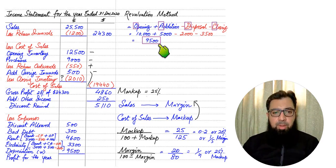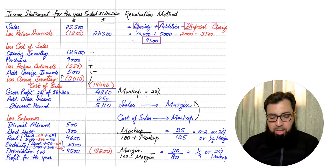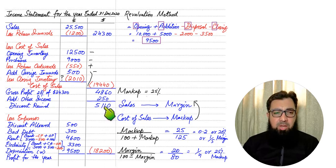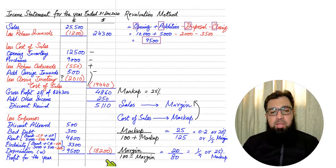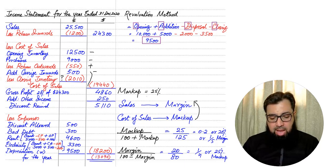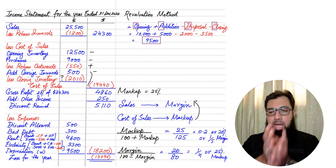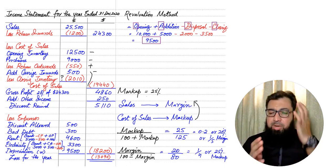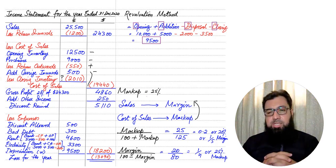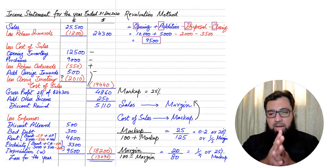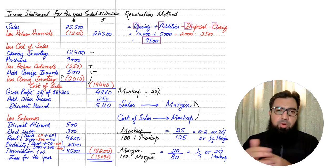Once we have the depreciation figure, we add all expenses and deduct them from the gross profit plus other income subtotal to get profit for the year. If the expenses exceed that subtotal, the result is negative, indicating a loss for the year. If positive, it is profit. We are now done preparing the income statement using single entry and incomplete records. In the next part, we will discuss other methods to calculate profit, including a statement of affairs to calculate opening capital.